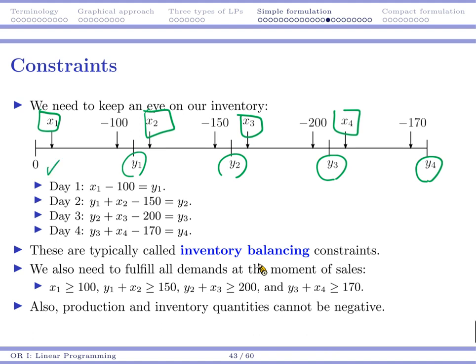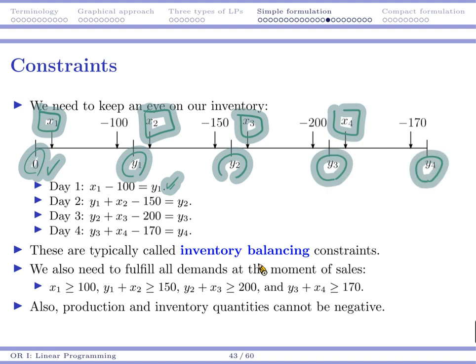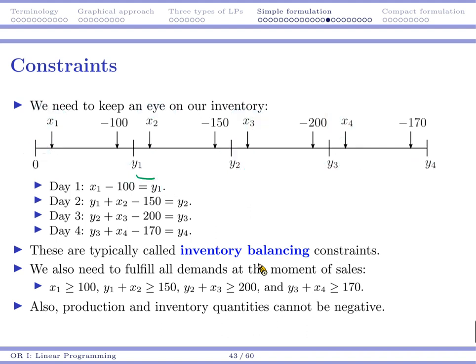So that's not too difficult because we already have that equation, right? So pretty much for day one, initially you have nothing. So your y_1, your ending inventory is x_1 minus 100. And then for the second day, your y_1 plus x_2 minus 150 becomes your y_2. Whatever amount you have at the beginning plus the amount you add into your inventory minus the amount you sell becomes the ending amount you have. For the other two days, that's the same thing. These are typically called the inventory balancing constraints.